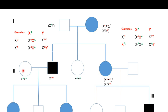When crossing the affected male from generation two with a normal female: all daughters are affected because they receive one X chromosome from their affected father, and all sons are normal because they receive their X chromosome from their normal mother. The affected female's genotype is heterozygous, and the normal male's genotype carries only the normal allele on his single X chromosome.